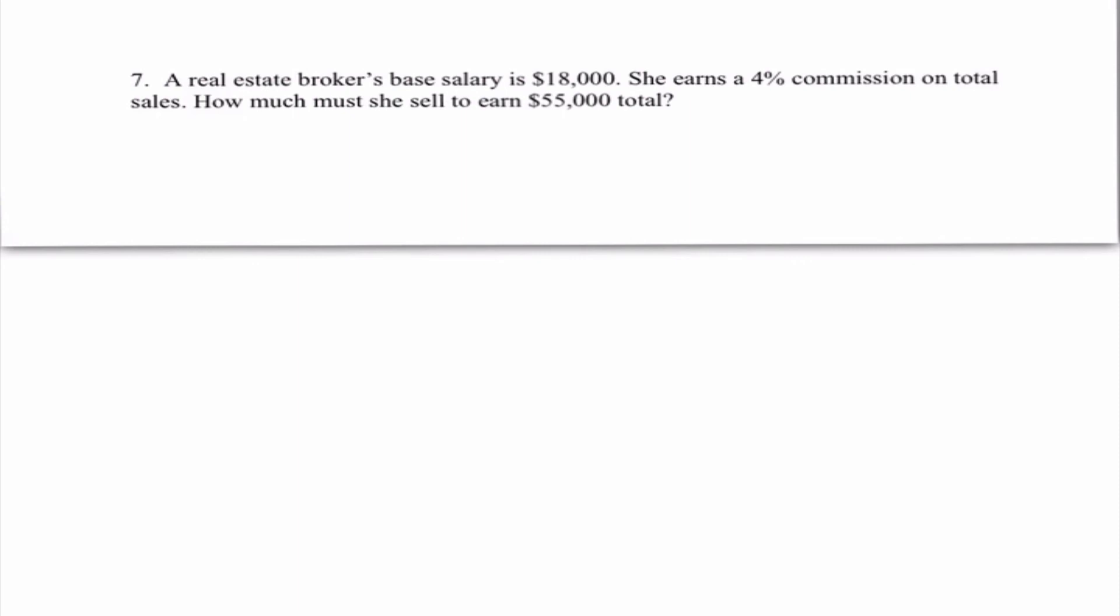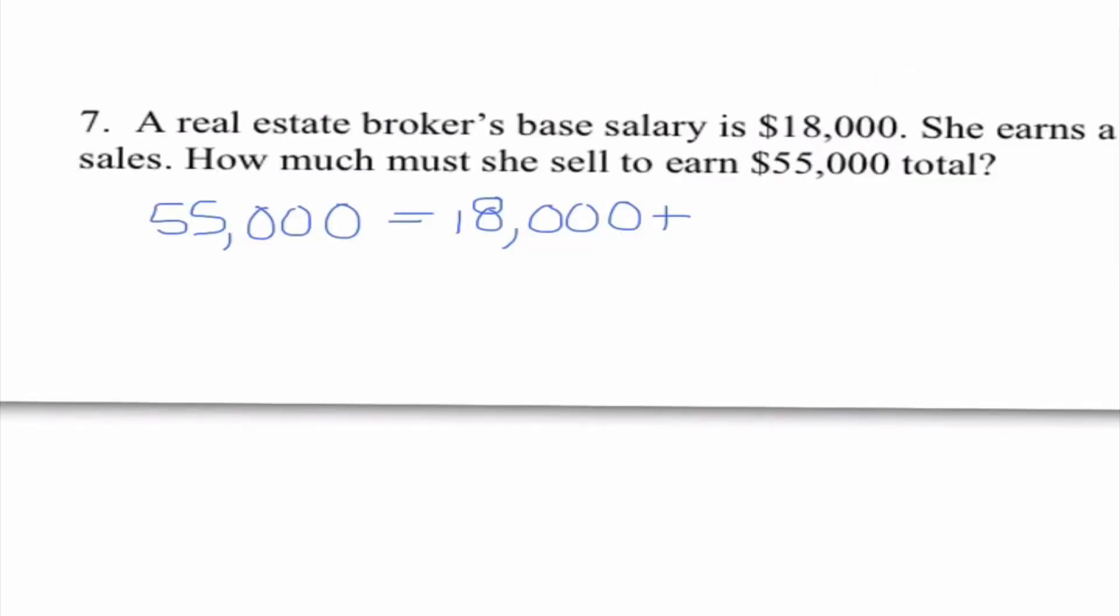So it says, a real estate broker's base salary is $18,000. I'm thinking that's going to be important. She earns a 4% commission on total sales. How much must she sell in order to earn $55,000 total? So when I'm writing out this equation, I know that $55,000 is the total amount of money she's trying to make. She gets paid $18,000 no matter what. That's her base salary. But we also need to add on her commission.